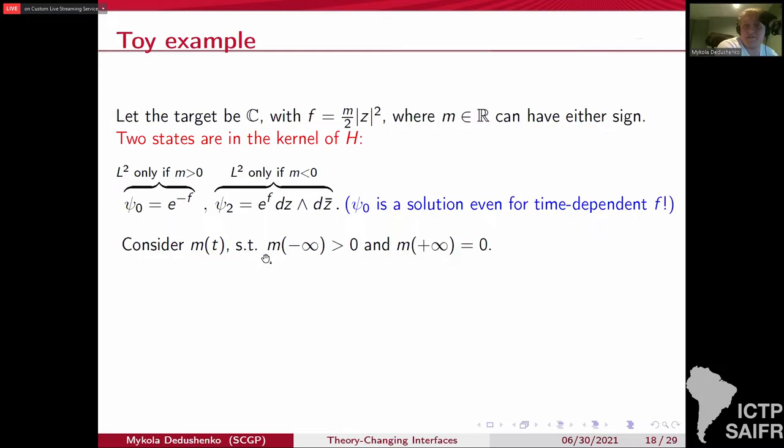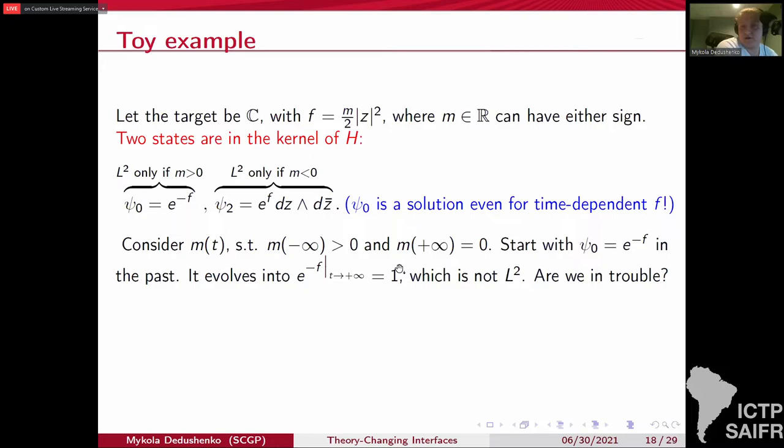So what you can do, we'll consider the following configuration. Start with positive mass in the far past and assume that mass becomes zero in the future. And in the past, we've started with this normalizable state e^{-F}. But then in the future, because mass becomes zero, it just simply becomes one. Which is not square normalizable. So we must be in trouble, right? But so far, I've ignored equivariance. I just considered this without equivariant parameters.